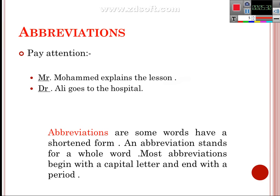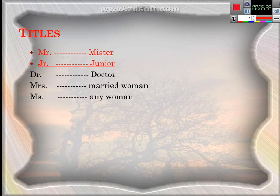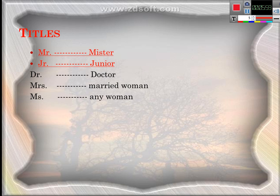Let's start with titles, because we have many types of abbreviations. The first type is titles. M capital R — Mr. — begins with a capital letter and ends with a period. Mr. is an abbreviation. Most abbreviations begin with a capital letter and end with a period.